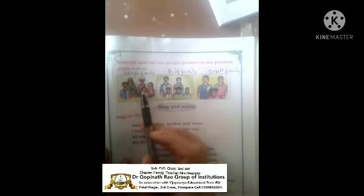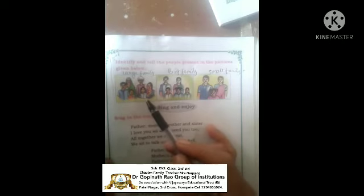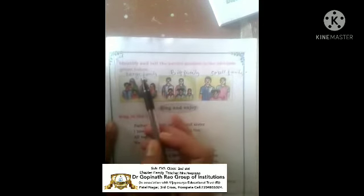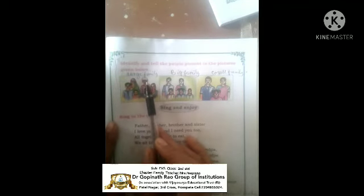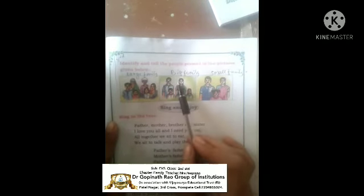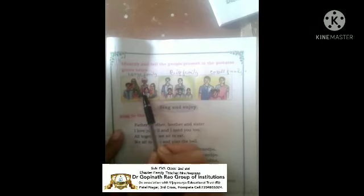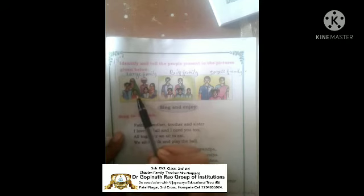Next, here are some examples showing pictures of the types of families. First identify and tell the people present in the pictures. This type of family is called a large family because it is a joint family with so many members. Next is a big family — only father, mother and their children. And for a small family, father, mother and only one child. In the first family: grandmother, grandfather, father, mother, brother and sister — many members makes it a large family.